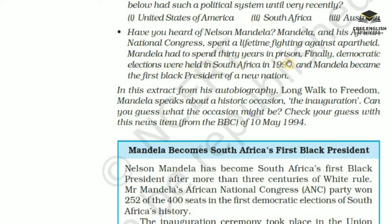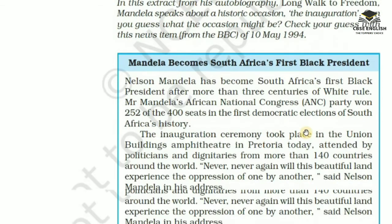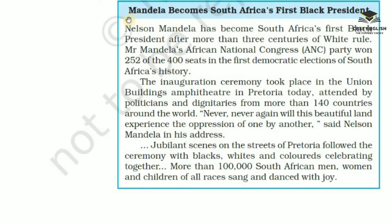Mandela had to spend 30 years in prison. Finally, democratic elections were held in South Africa in 1994, and Mandela became the first black president of a new nation. In this extract from his autobiography Long Walk to Freedom, Mandela speaks about a historic occasion — the inauguration. Can you guess what the occasion might be? Check your guess with the news item from the BBC of 10th May 1994 inside the box: 'Mandela becomes South Africa's first black president.'